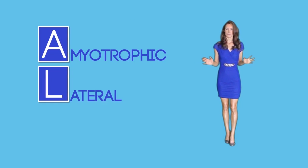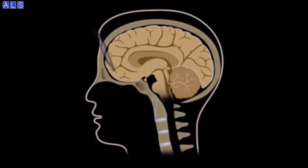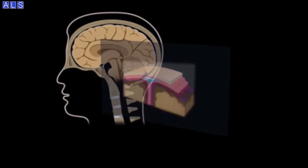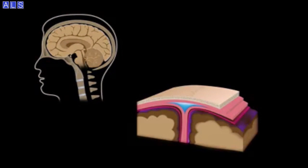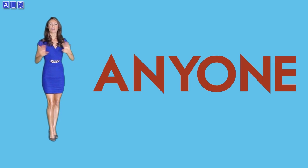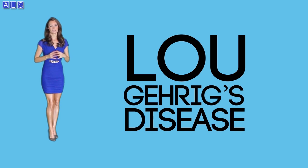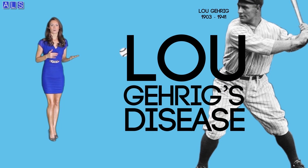Without further ado, let's get started. ALS — amyotrophic lateral sclerosis, abbreviated as ALS — is a progressive neurodegenerative disease in which the motor neurons of the nervous system gradually degenerate and eventually die. Irrespective of background, ethnicity, and race, anyone can fall victim to this condition. ALS is also called Lou Gehrig's disease, after the well-known baseball player who died from the disease. It is one of the most common neuromuscular diseases of today.